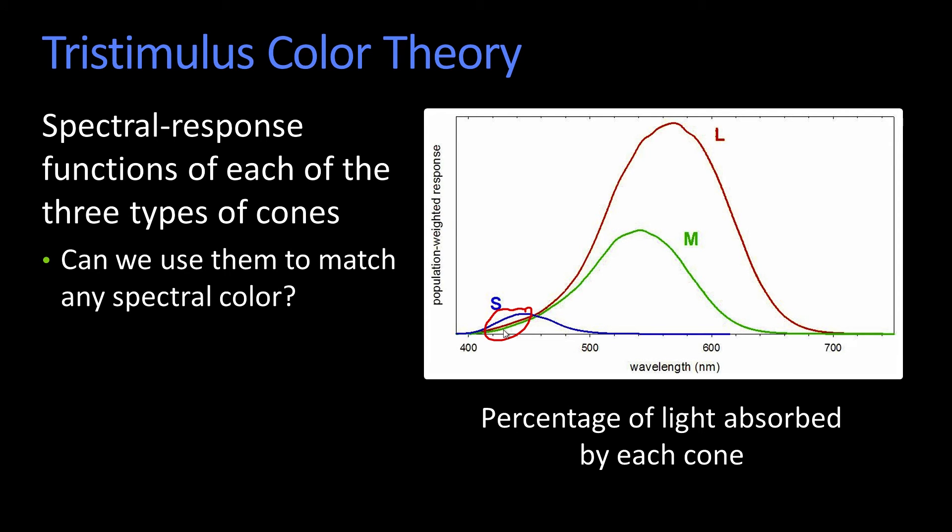So the question then is, how would we use the outputs of these three types of receptors in order to see color, and particularly spectral color?